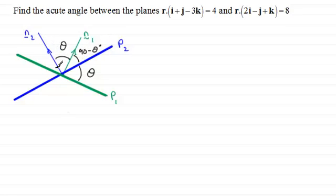And because N2 is perpendicular to P2, then this angle would be 90 degrees. So because this is 90 minus theta, this must be theta. So that these two angles add up to 90 degrees.